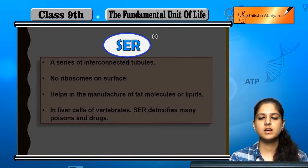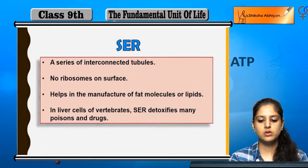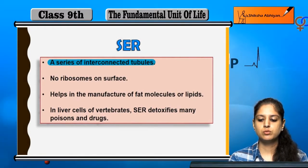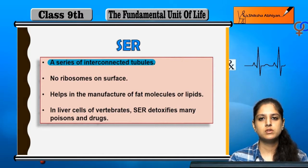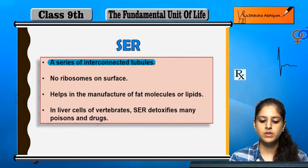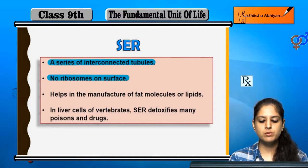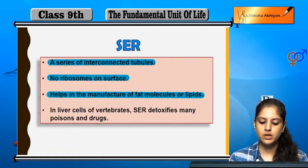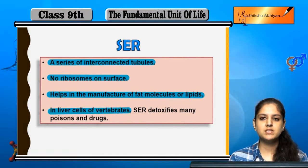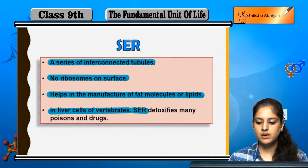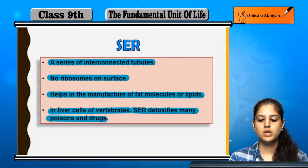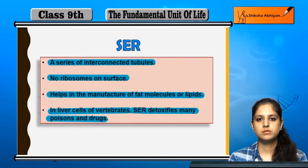Next, what is SER? SER means smooth endoplasmic reticulum. It consists of a series of interconnected tubules. There are no ribosomes on their surface. SER helps in the manufacture of fat molecules or lipids. In the liver cells of vertebrates, SER detoxifies many poisons and drugs. These are the functions that rough and smooth endoplasmic reticulum perform.